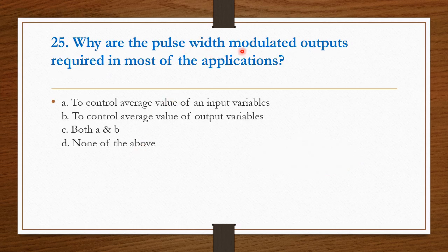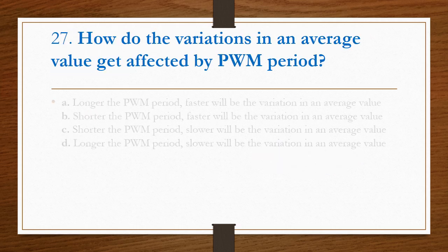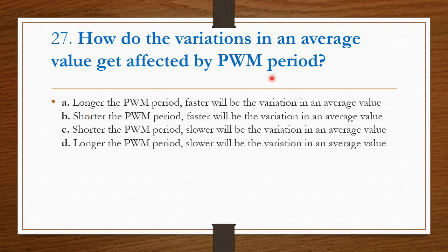Why are the pulse width modulated outputs required in most of the applications? To control the average value of the output variables, we need pulse width modulated outputs. Option B is the right answer. What would be the resolution value if oscillator and PWM frequencies are 16 MHz and 2 MHz respectively? Option B is the right answer. How do the variations in an average value get affected by PWM period? Shorter the PWM period, faster will be the variation in an average value. Option B is the right answer.